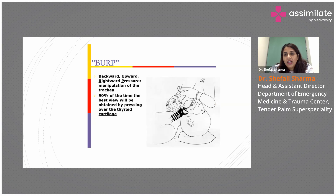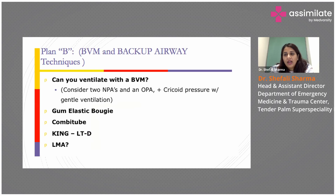Plan B is back to bag-mask ventilation. You can insert an oropharyngeal airway. In a 'can't ventilate' situation — where you've tried with the ET tube, performed laryngoscopy, and are unable to visualize the airway — you move to the next plan.